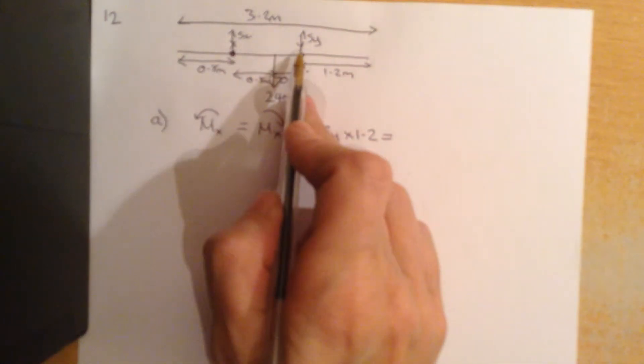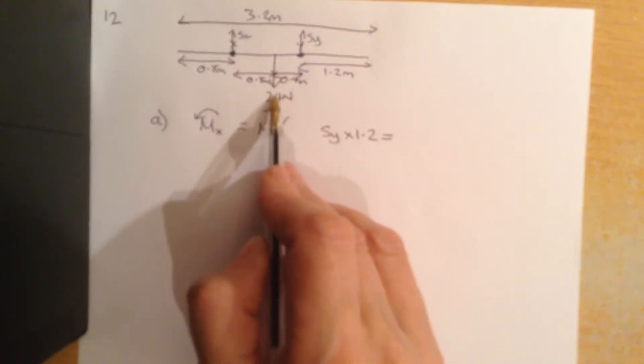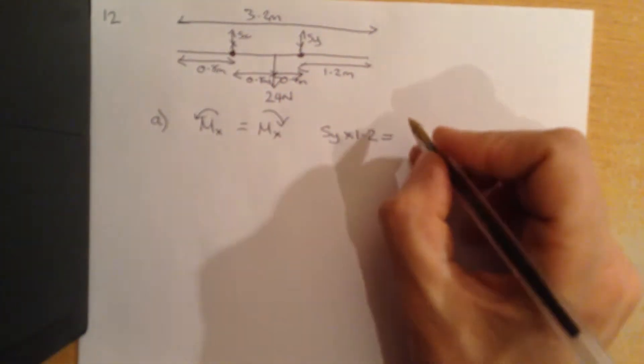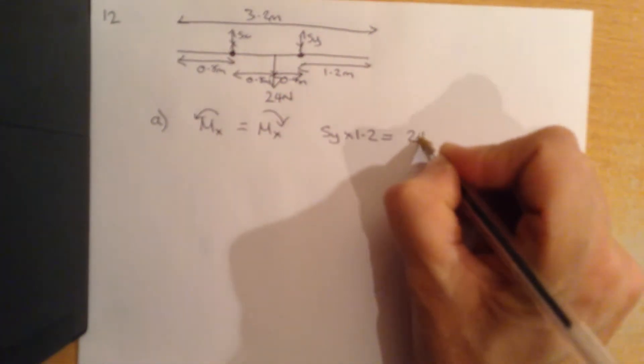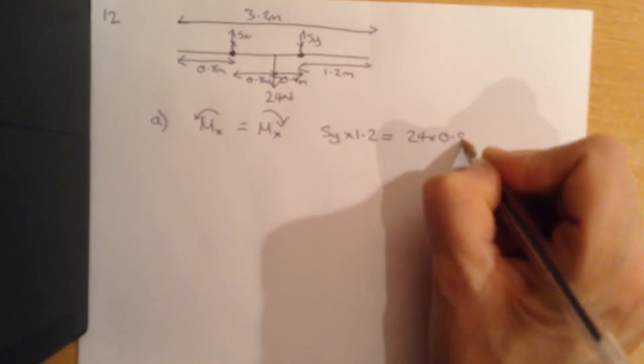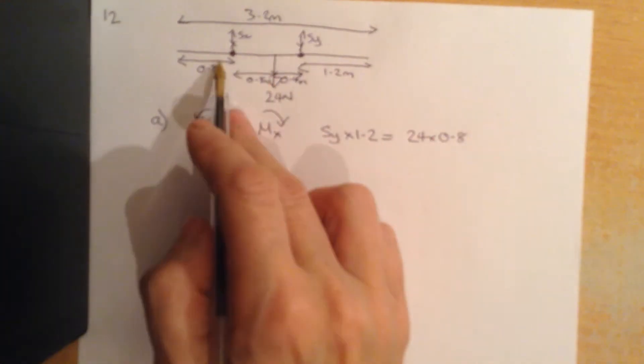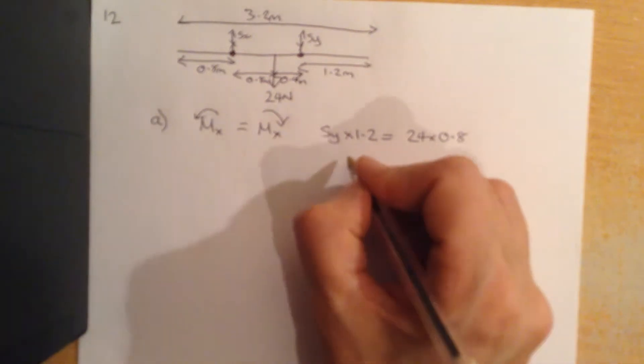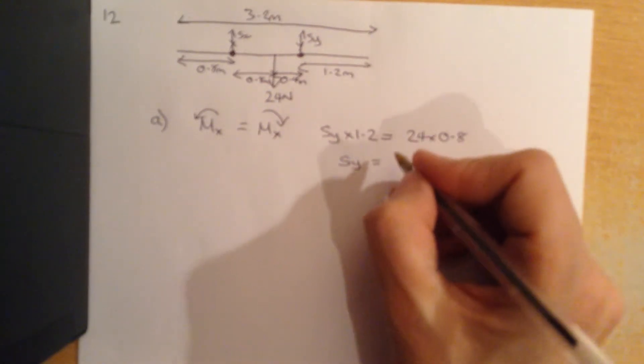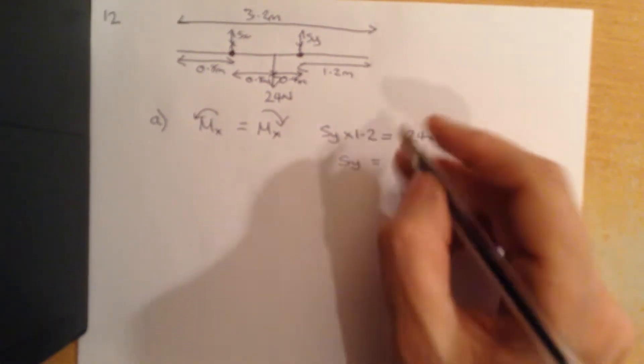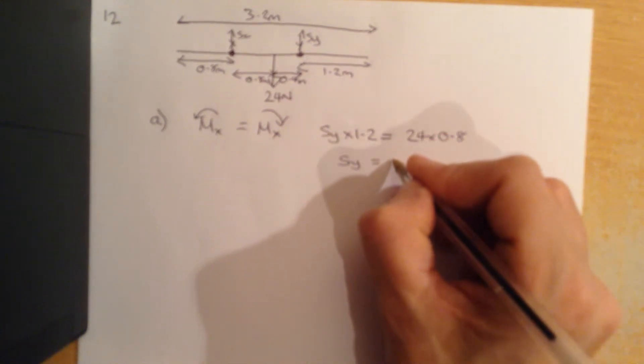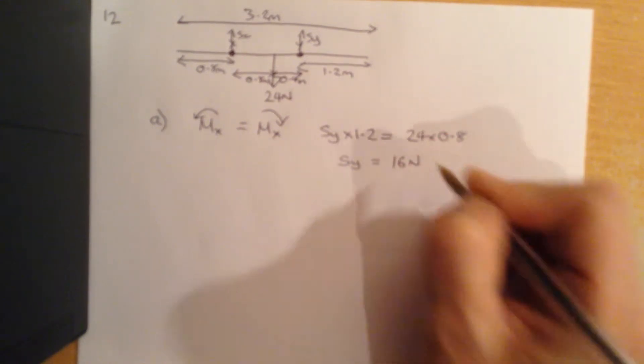So that SY is balanced only by the weight because there's nothing else on the pole, which is 24 times 0.8 metres away from X. So SY is going to be equal to, if we put the numbers in, 16, 16 newtons.